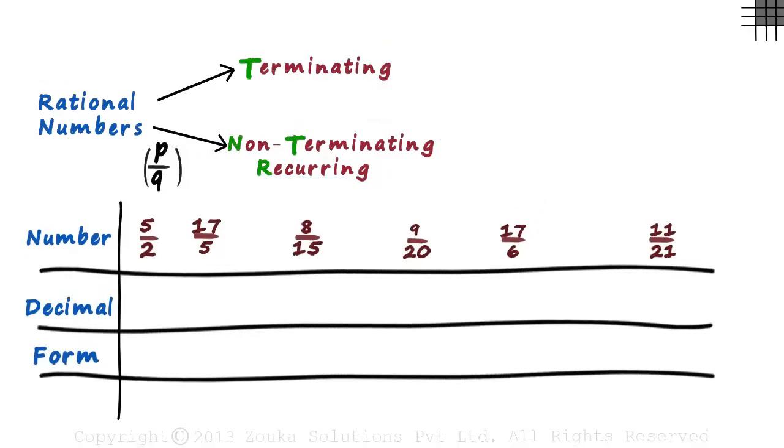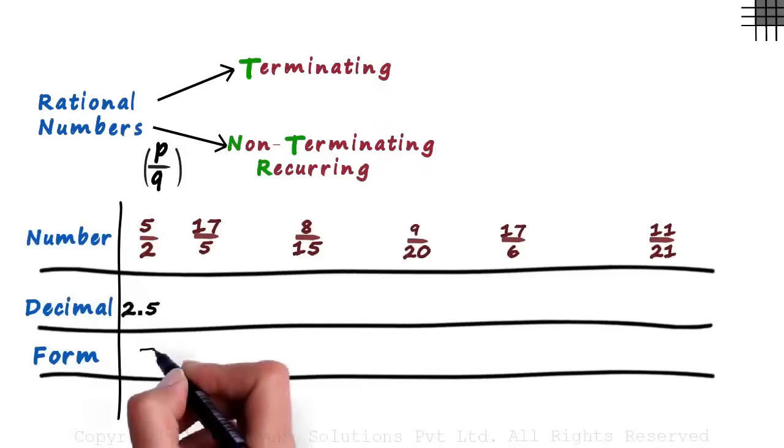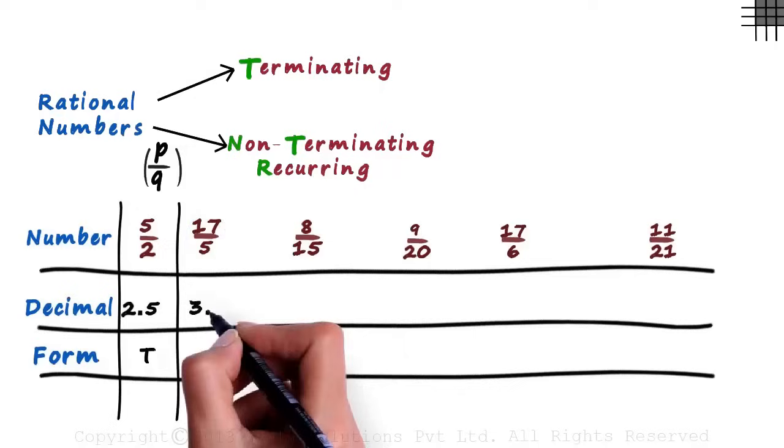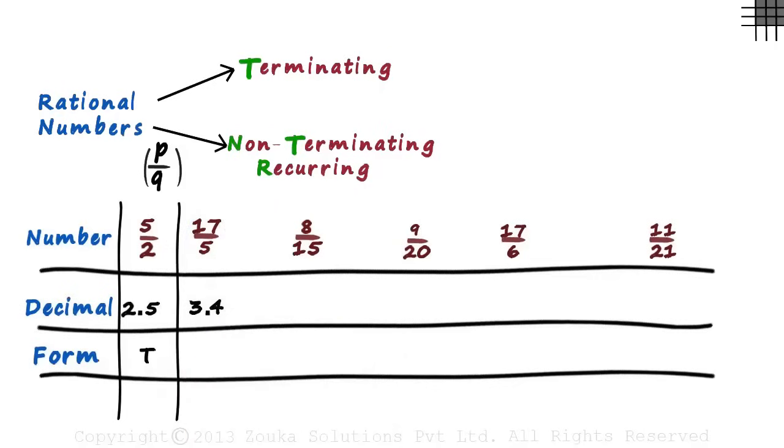Let's try calculating the decimal values of each of the numbers first. 5 by 2 can be written as 2.5. So we can say that it is terminating. The digits after the decimal point end and do not go on forever. 17 by 5 equals 3.4 which is also terminating.